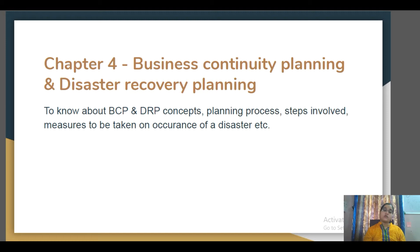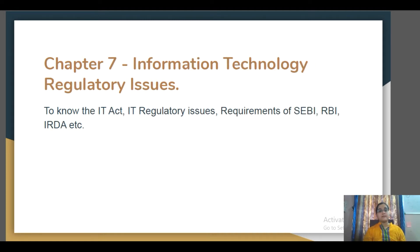What is the concept of Disaster Recovery Planning, how the planning is programmed, what are the steps taken, and how it is being implemented — we will be learning in this chapter. Then Chapter 7: Information Technology Regulatory Issues. We will be seeing what are the laws, rules and regulations that affect information technology and with which entities must comply.